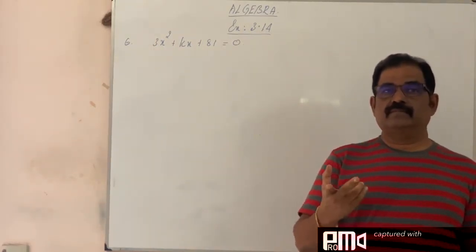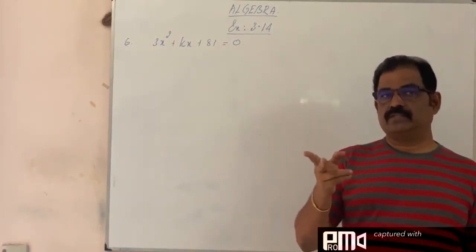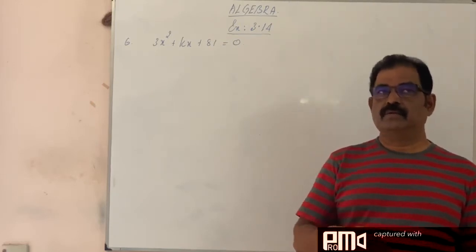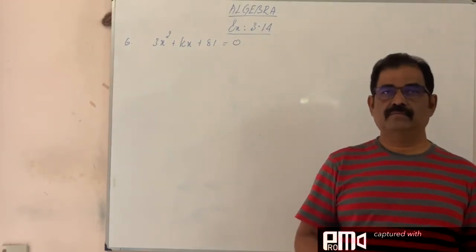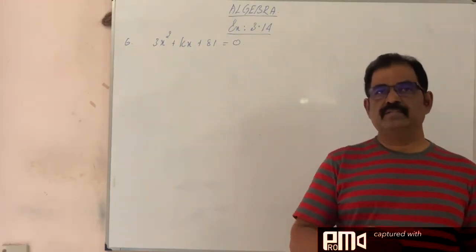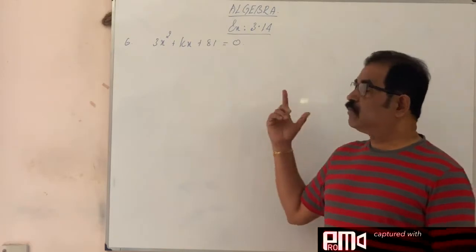One root is square of the other. Previously we saw one root is twice the other, so two times. Now square of the other, so one root is alpha means the other will be alpha square. One root is beta means the other one is beta square. So one root is square of the other.